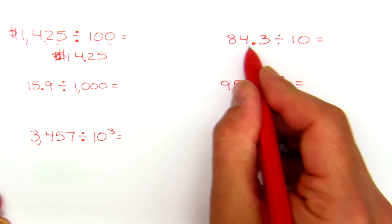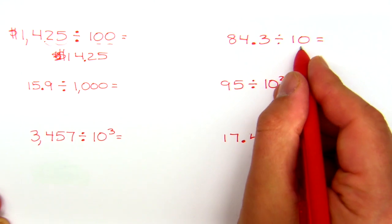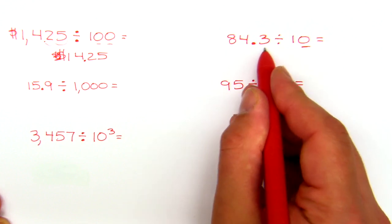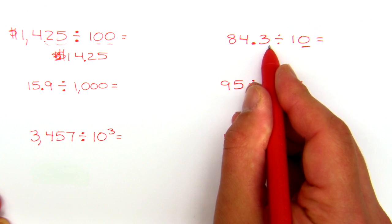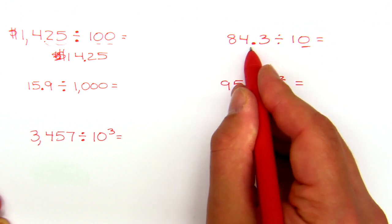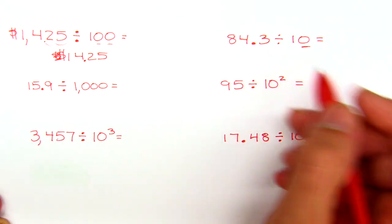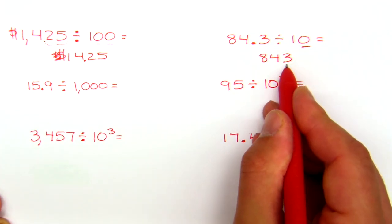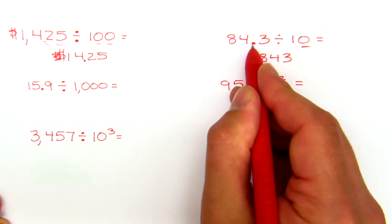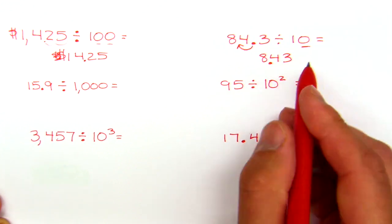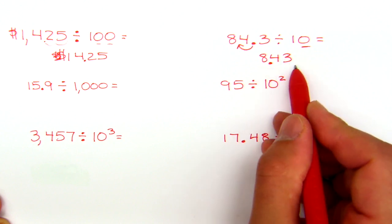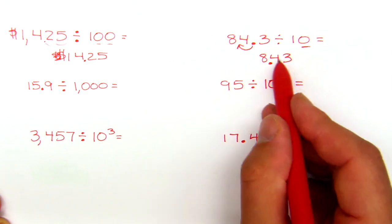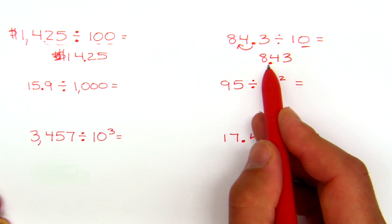Eighty-four and three tenths divided by ten: ten has one zero, so we're going to move the decimal one place. Now you might ask, which direction? Well, since we're dividing by a whole number, if I moved it to the right the number would get bigger — up to 843 — and that doesn't make sense. So the decimal moves to the left, making the number smaller. A quick way to do this is to copy down all the digits: 8, 4, 3 — then move the decimal one place to the left. When writing your official answer, keep it clean without loops or arrows. So eighty-four and three tenths becomes eight and forty-three hundredths.